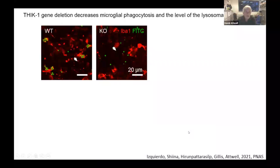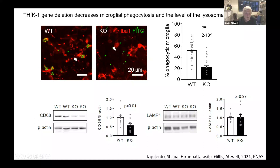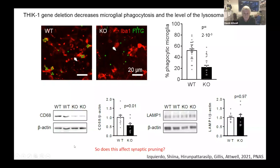In the THIK1 knockout mouse, there are very few beads inside microglia and phagocytosis goes down by about 60 percent. CD68, a lysosomal marker expressed almost entirely in microglia, is roughly halved, whereas the more general lysosomal marker LAMP1 — expressed in astrocytes, neurons, and oligodendrocytes — is unaffected. Knocking out THIK1 has decreased phagocytosis and downstream lysosomal activity.